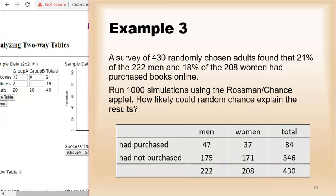A survey of 430 randomly chosen adults found that 21% of the 222 men and 18% of the 208 women had purchased books online. You see the results in this table. Run a thousand simulations using the Rossman chance applet. How likely could random chance explain this difference between men and women?